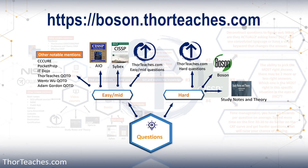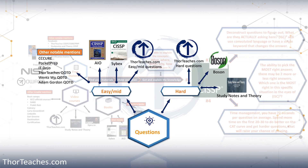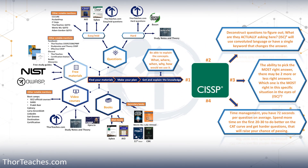You can get Boson at boson.thorteaches.com. And as the last set of hard questions, again, Luke Ahmed's Study Notes and Theory — he has about 600 hard questions, and all his questions are only hard. They tend to lean slightly more technical and are harder than at least Boson and possibly even harder than the exam itself, which is not a bad thing — I think it can possibly prepare you even better. So to finish this out: use the easy questions first, hard questions towards the end. Get 3,000 to 5,000 questions total, and I suggest getting at least 1,500 hard ones — that means at least two of the three hard question banks I've listed.